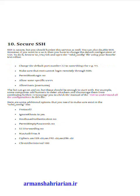Step 10: Secure SSH. SSH is secure, but you should harden this service as well. You can also disable SSH. However, if you want to use it, change the default configuration. Browse to /etc/ssh and open the sshd_config file. Change the default port 22 to something else (e.g., 99). Make sure root cannot log in remotely: PermitRootLogin no. Allow specific users: AllowUsers username.